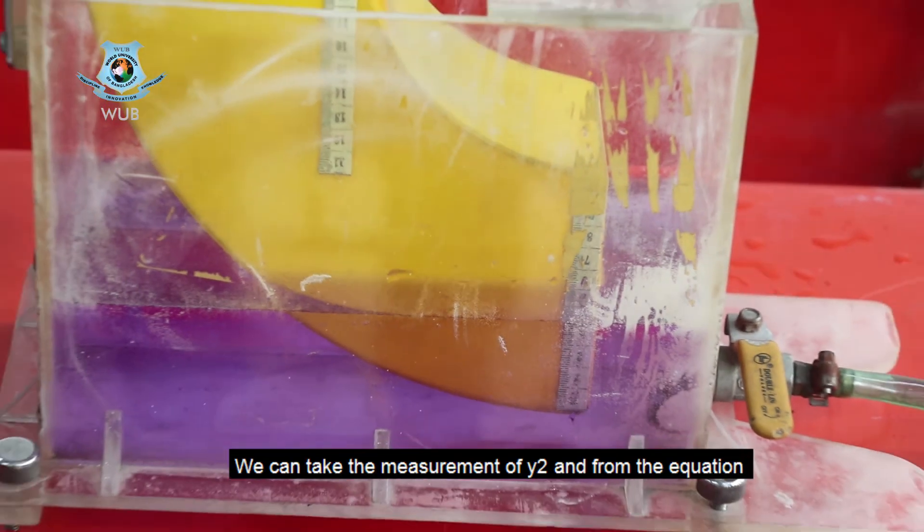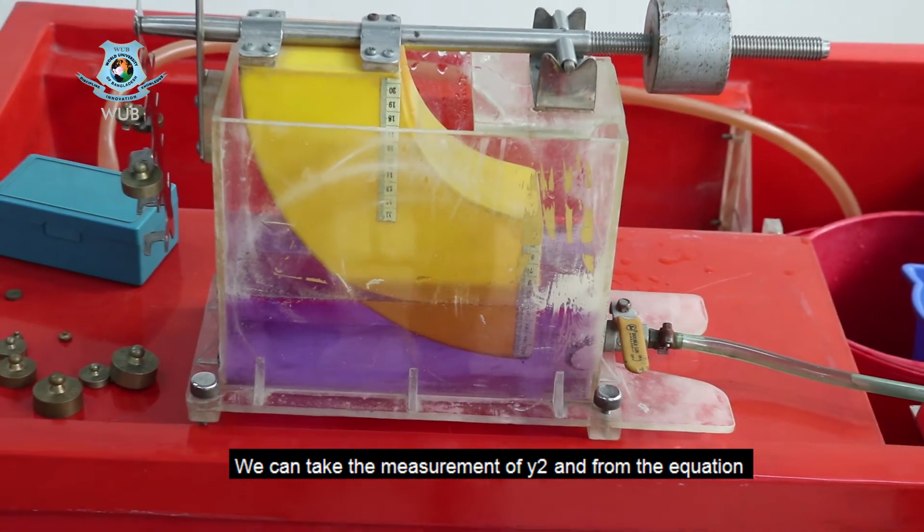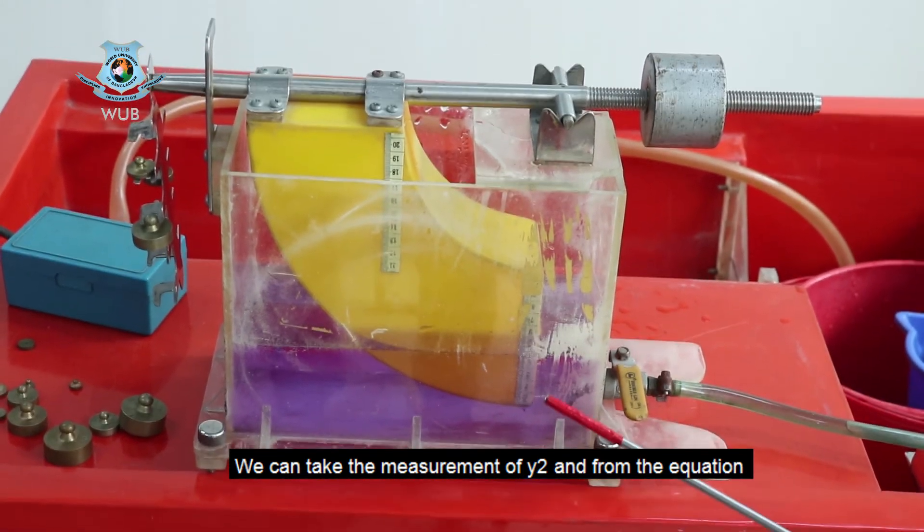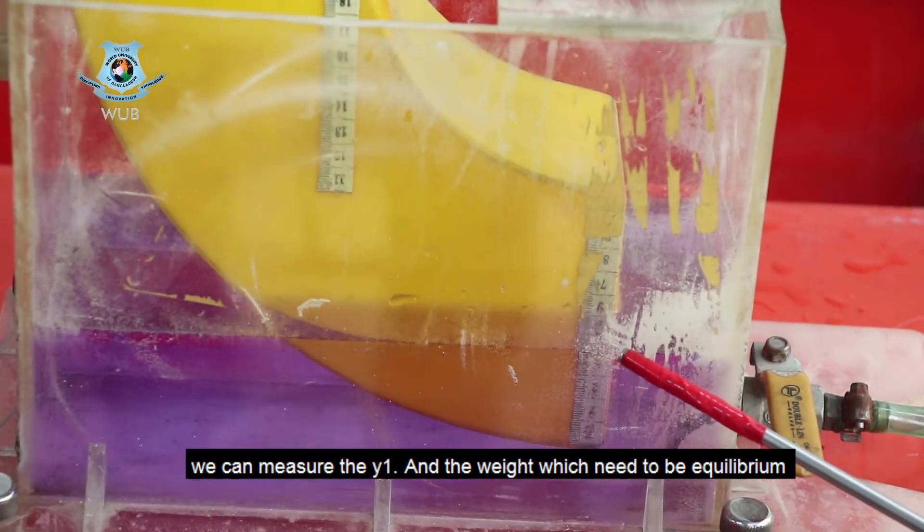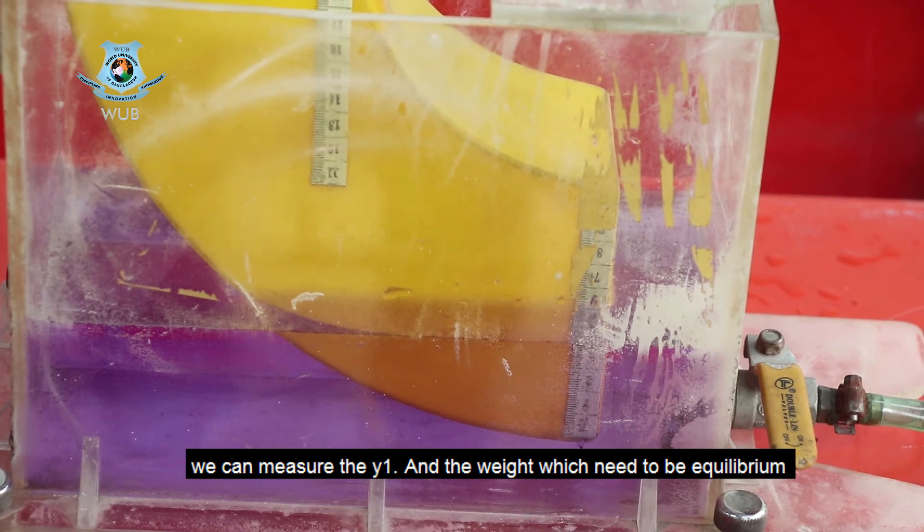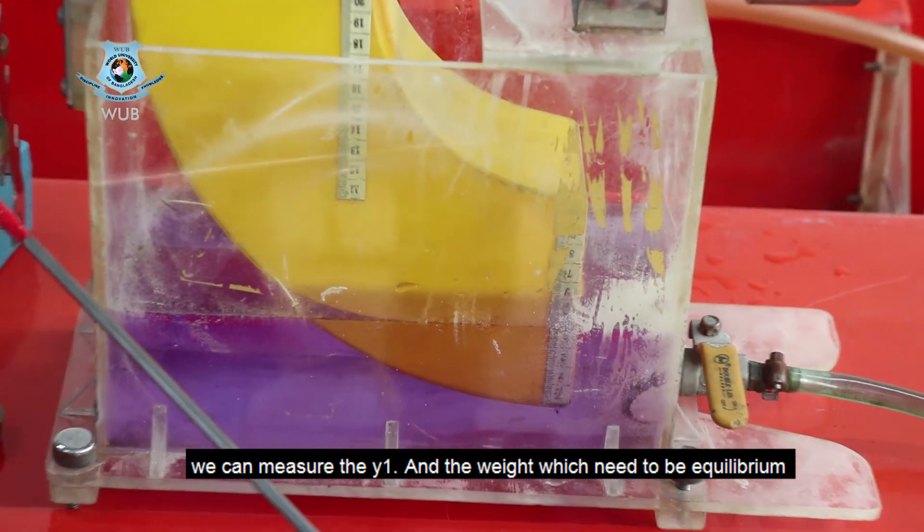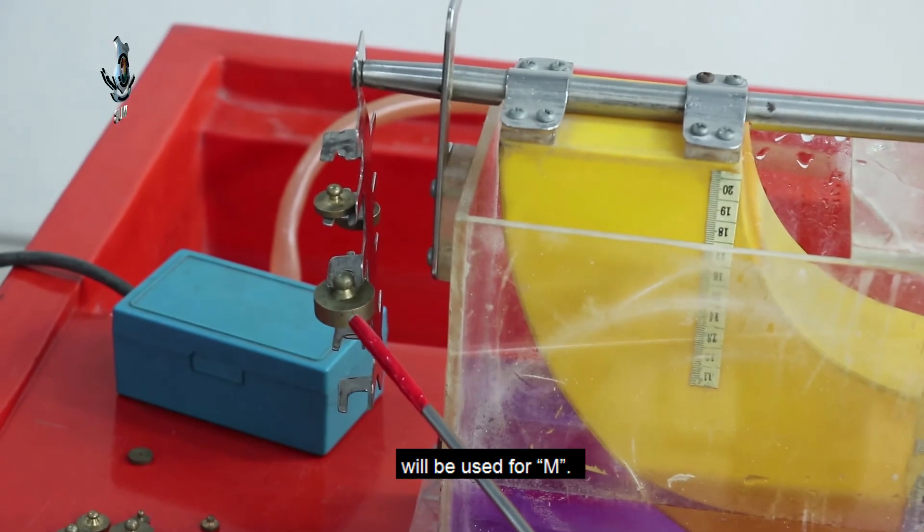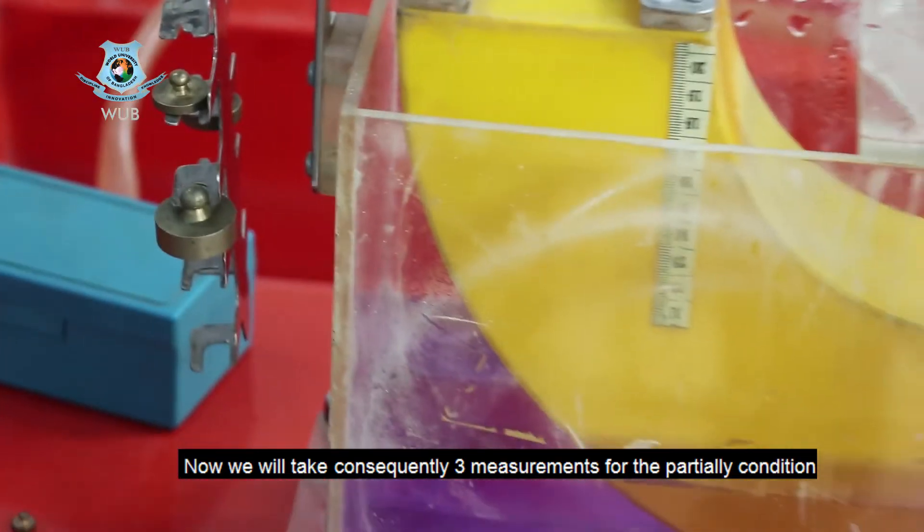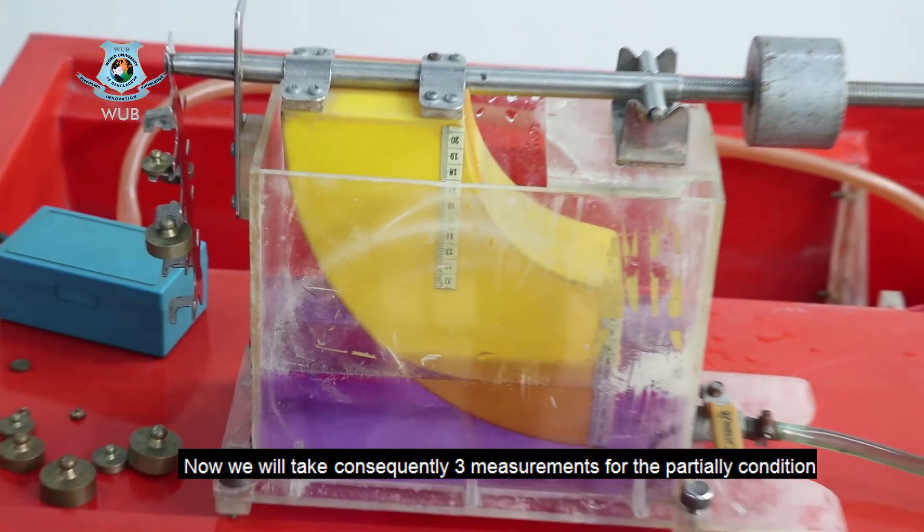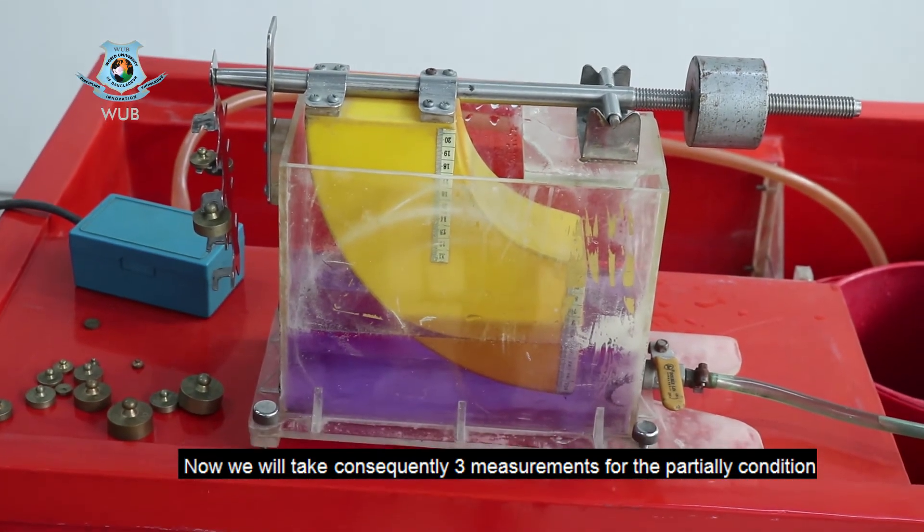We can take the measurement of Y2 and from the equation we can measure Y1. And the weight that needs to be in equilibrium will be used for capital M. Now we will take currently three measurements for the partial condition.